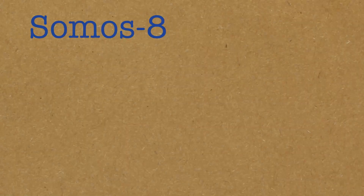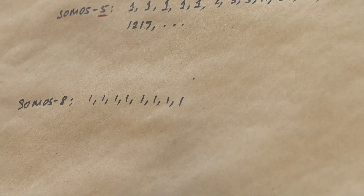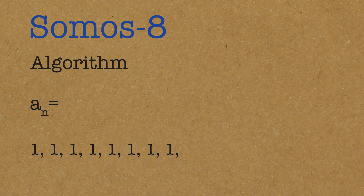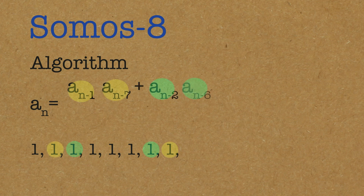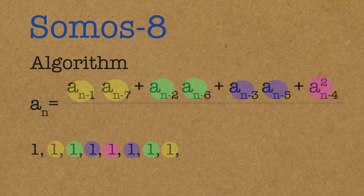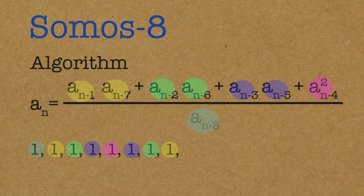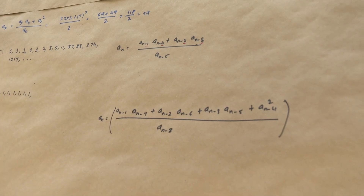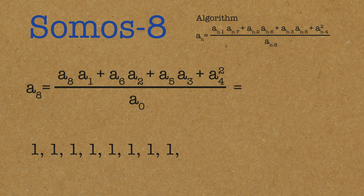Somos 8 starts with a string of eight ones. The algorithm is: a_n = (a_{n-1} times a_{n-7} + a_{n-2} times a_{n-6} + a_{n-3} times a_{n-5} + a_{n-4} squared) divided by a_{n-8}. You can see the algorithms are also growing, but there is a nice pattern going on. All ones up to this point.